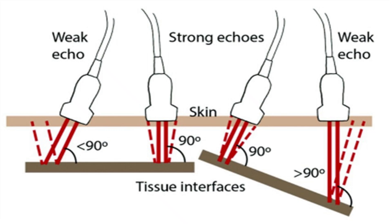To clarify: the angle of insonation — the angle between the ultrasound beam and the nerve structure — is not always the same as the angle between the probe and the skin. It depends on how parallel the structure runs to the skin. If the structure is almost parallel to the skin, placing the probe perpendicular to the skin makes sense. But if the structure doesn't run parallel to the skin, the probe needs a tilting angle so the ultrasound beam falls perpendicular to the nerve.